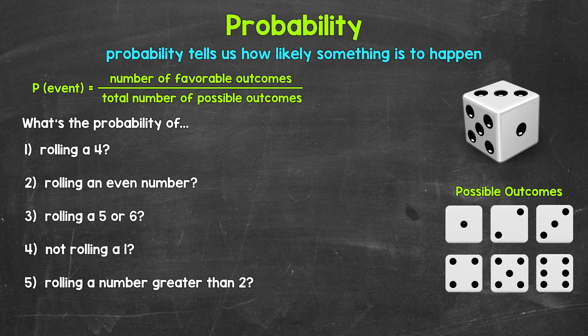Now remember, probability tells us how likely something is to happen — in other words, the chance of something happening. We can use the probability formula to find the probability of something. We have P for probability, and then in parentheses we have 'event.' An event is whatever we are finding the probability of.